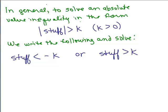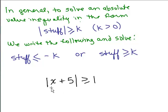In general, to solve an absolute value inequality in the form: the absolute value of stuff is greater than K, where K is greater than 0, you write that the stuff is less than negative K or the stuff is greater than K. If it was greater than or equal, you include the equal sign under both inequality symbols as well. The first problem on the next video is the absolute value of X plus 5 is greater than or equal to 1 — go ahead and try it, then watch the next video to check your answer.